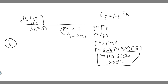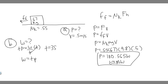Now for Part B, the question asks how much work do you do if you push the box for 35 seconds. For this problem we're solving for work. The formula we're going to use is power equals work over time, so solving for work gives us work equals time multiplied by power. We know the power is 180.565 watts, and the time is 35 seconds.